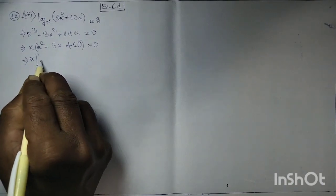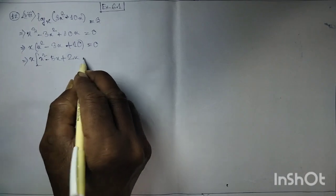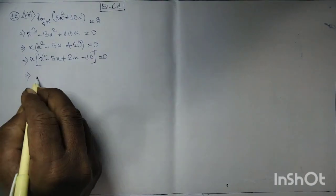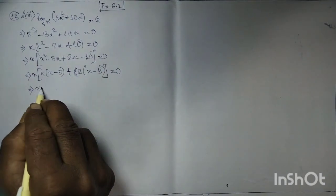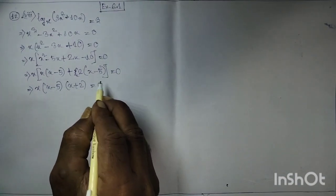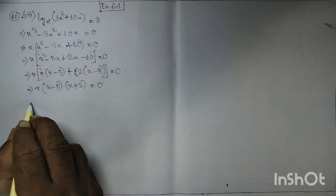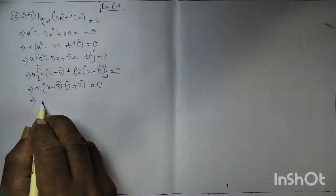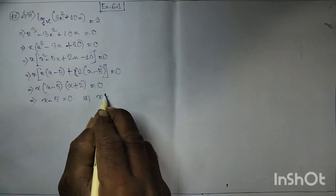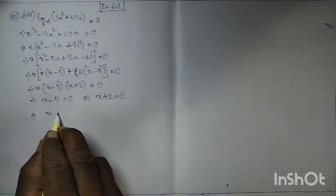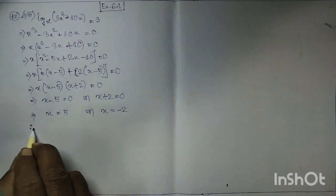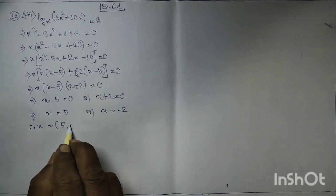This implies x into (x minus 5) plus 2(x minus 5) equal to 0, implies (x minus 5)(x plus 2) equal to 0. Therefore x minus 5 equal to 0 or x plus 2 equal to 0, giving x equal to 5 or x equal to minus 2.